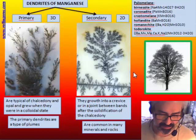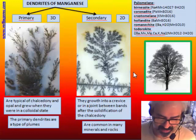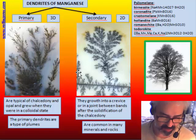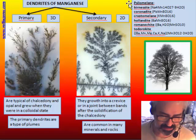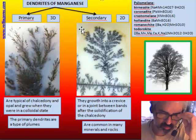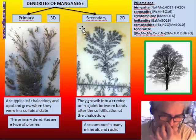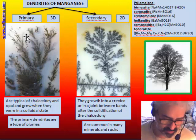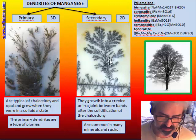Dendritic comes from the Latin 'dendros', meaning tree, so it is any structure with the shape of a tree. There are actually two very different kinds of dendrites: three-dimensional and two-dimensional.